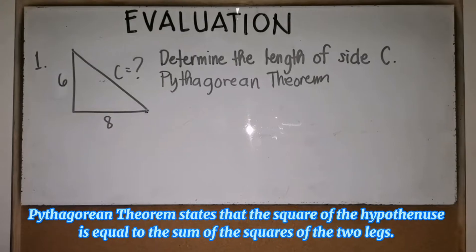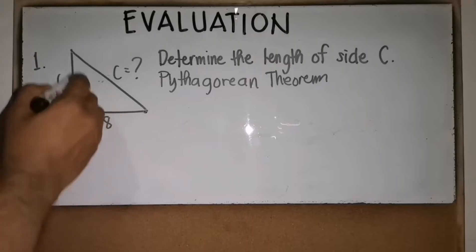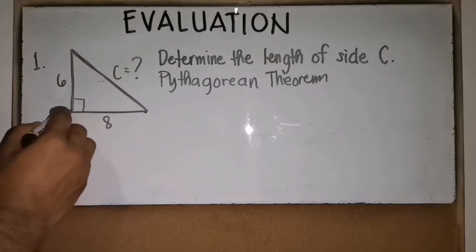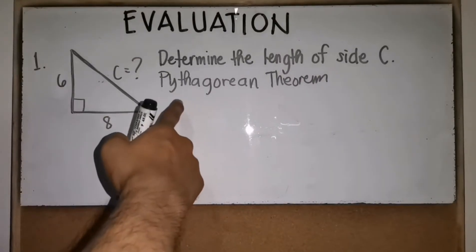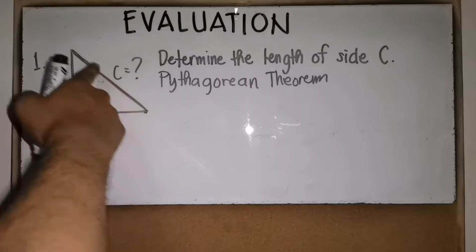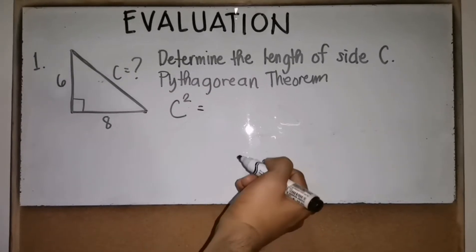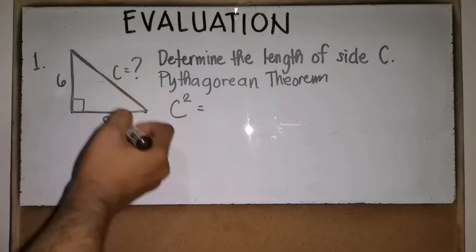The Pythagorean theorem states that the square of the hypotenuse is equal to the sum of the squares of the two legs. In this right triangle, one side is the hypotenuse and the other two sides are the legs.